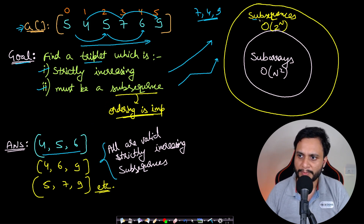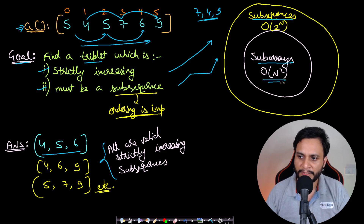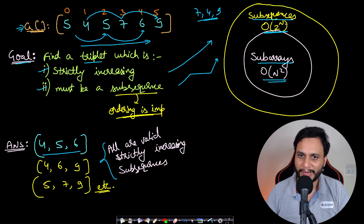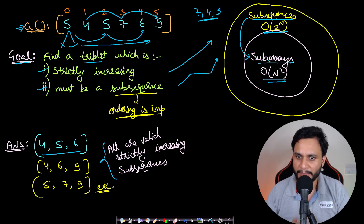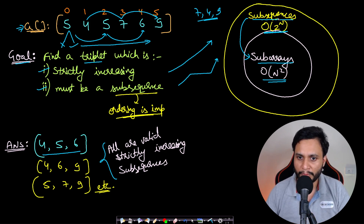Comparing subsequences with subarrays: for a subarray all elements must be contiguous, and for an array of size n there are O(n²) subarrays. But there are O(2^n) subsequences because each item has the option of being selected or not. All subarrays are a subset of all subsequences, and there are additional subsequences formed by skipping elements in between.